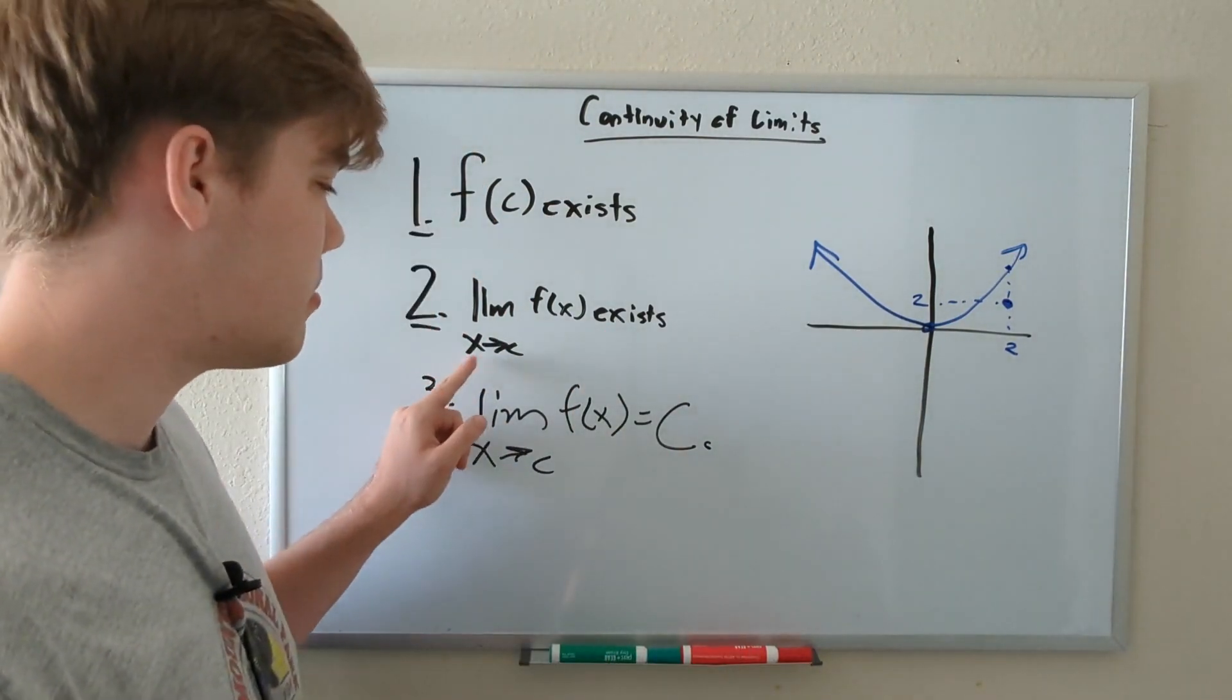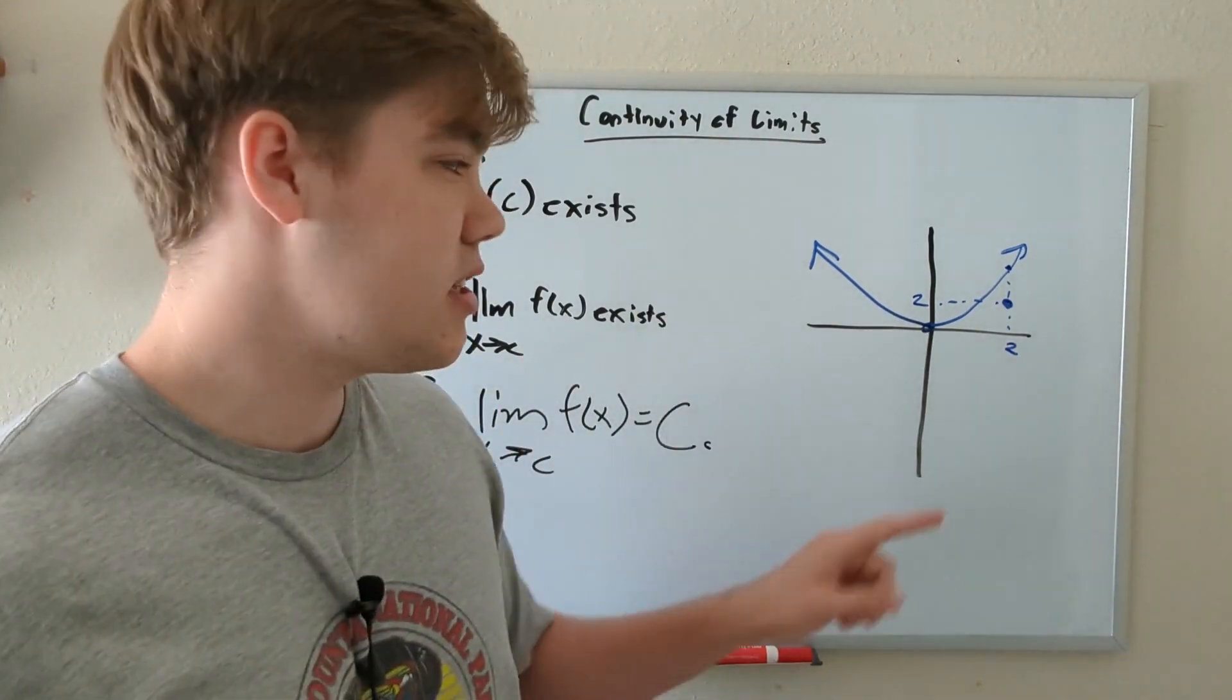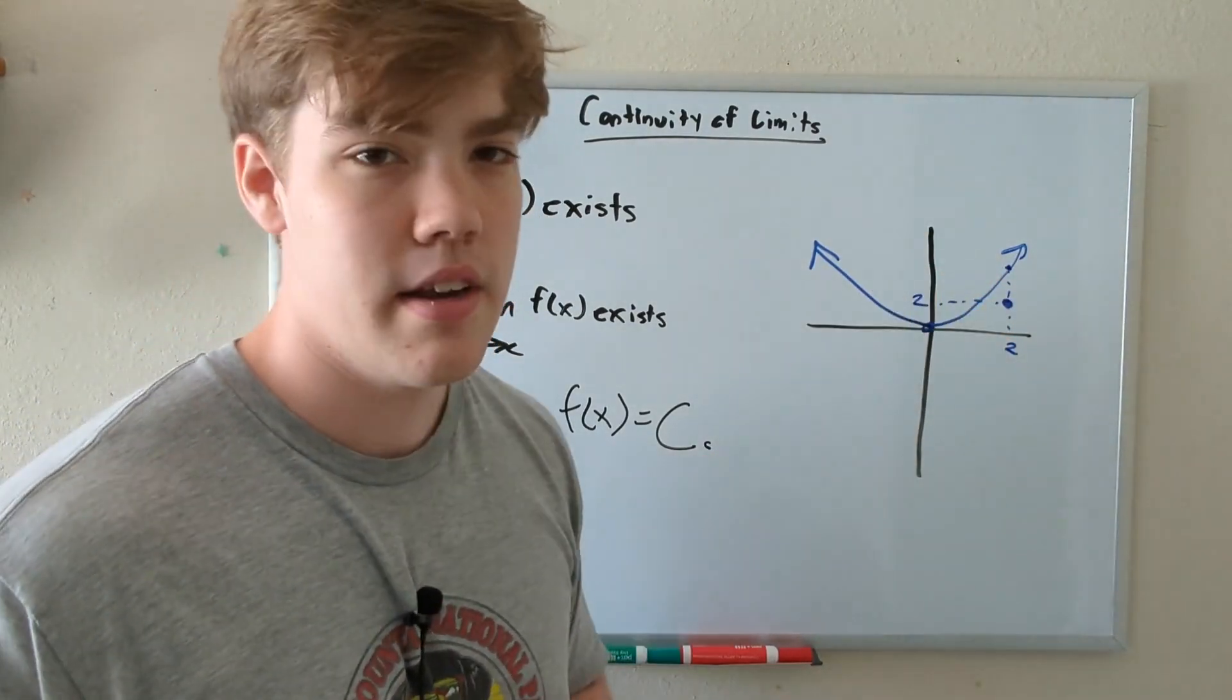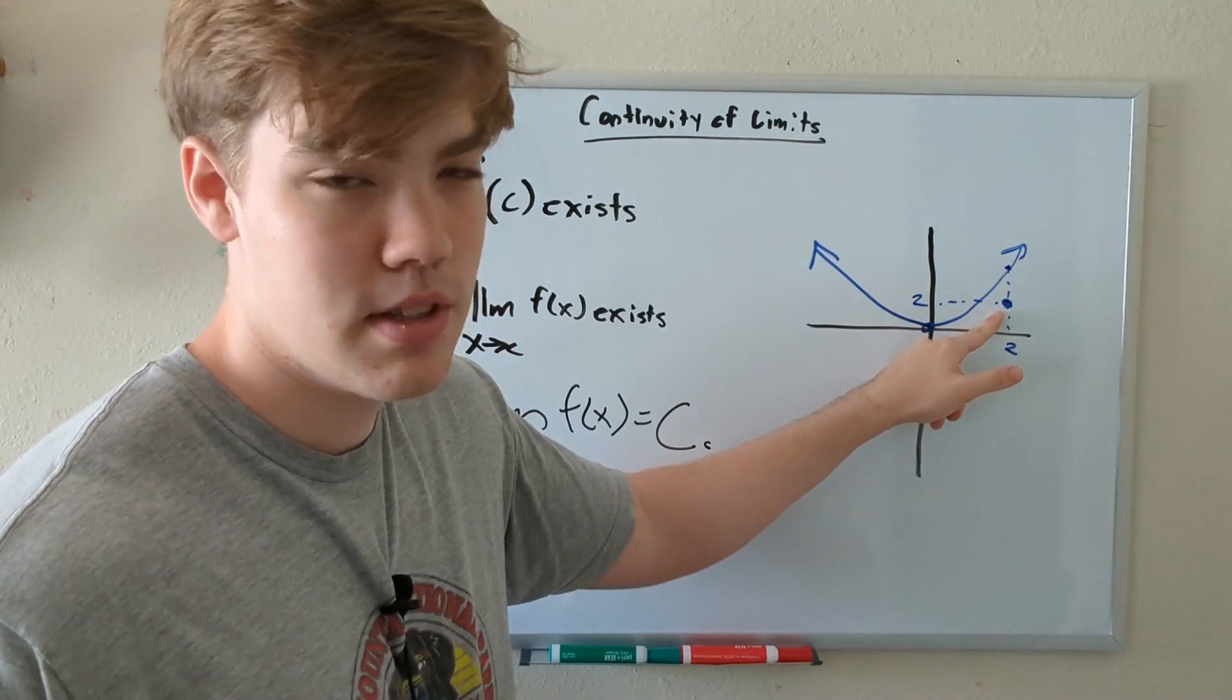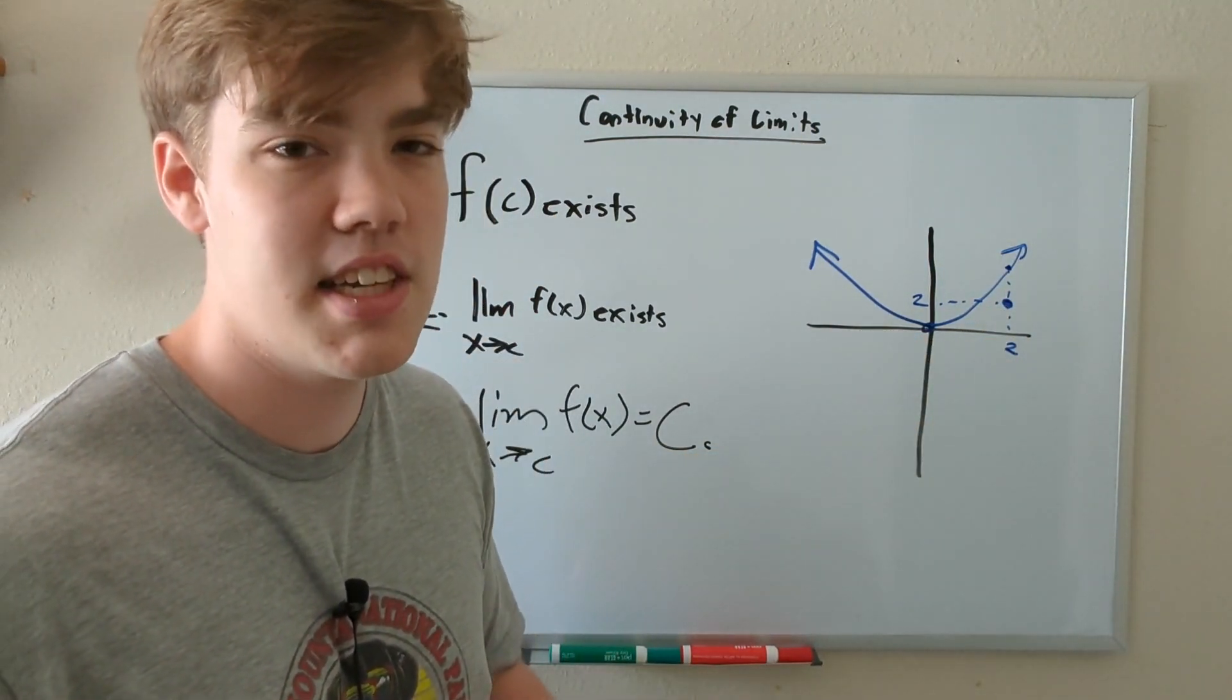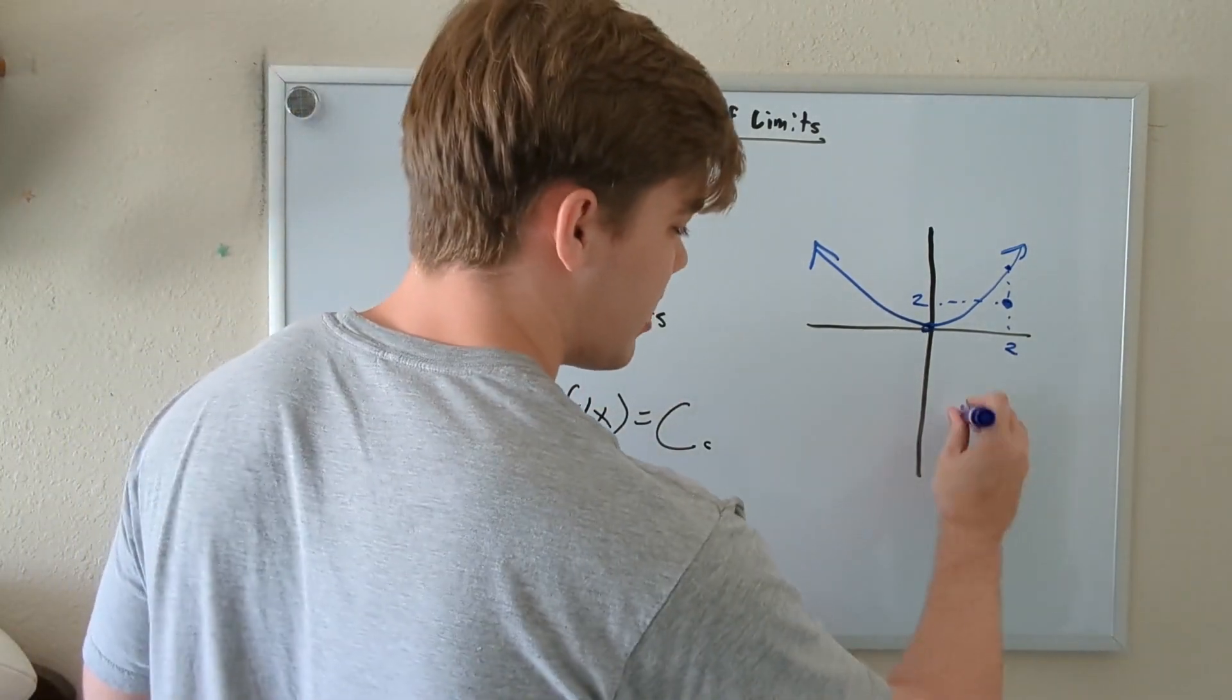Now let's check to see if the limit as X approaches C of F of X, aka our function over here, exists. And the answer to that is no. And let's explain why. When we look at this graph, you'll notice that we have a point here at X equals two, and another point at X equals two. And let's just say we went along this function until we reached X equals two. Well, we have two different possible limits. And since we have two limits, we can't choose one, and therefore the limit doesn't exist at X equals two. Therefore, this rule does not get checked off, meaning that this function is not continuous.